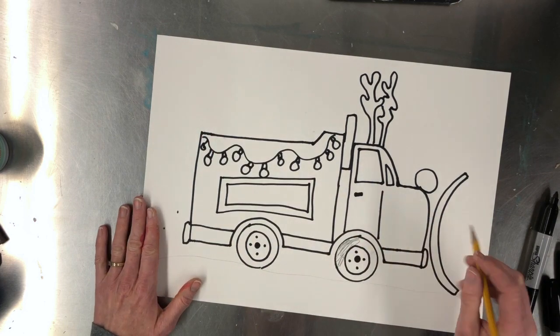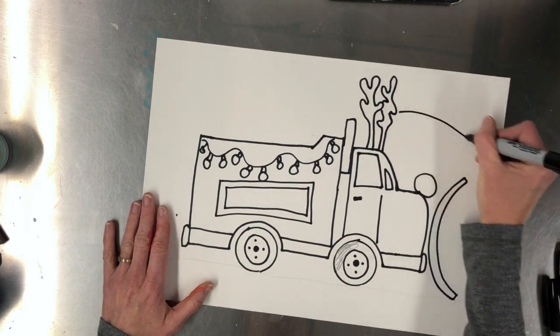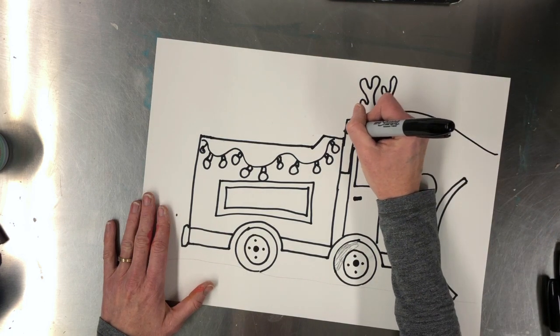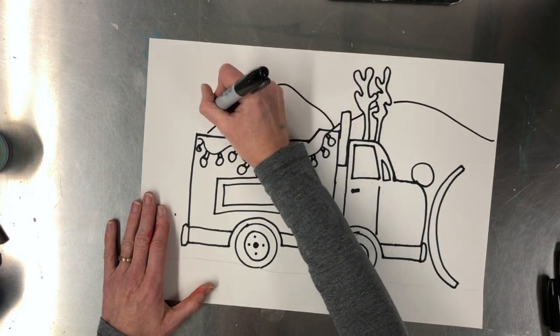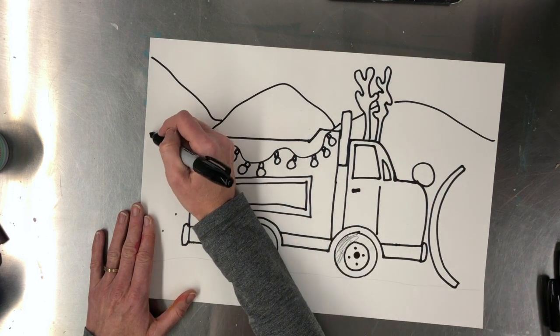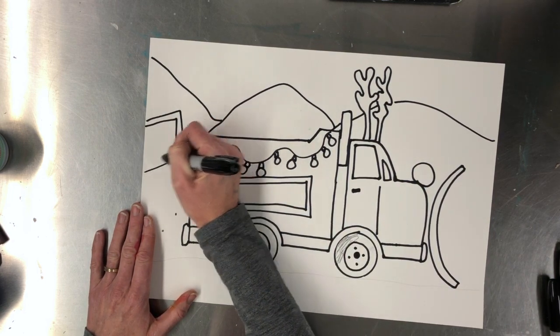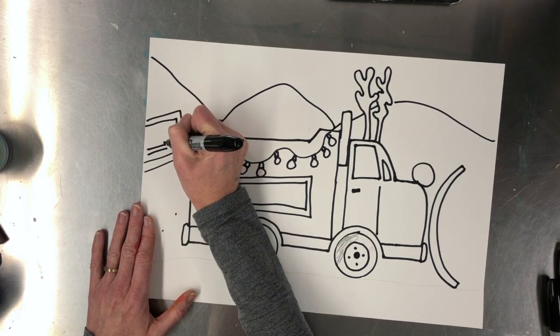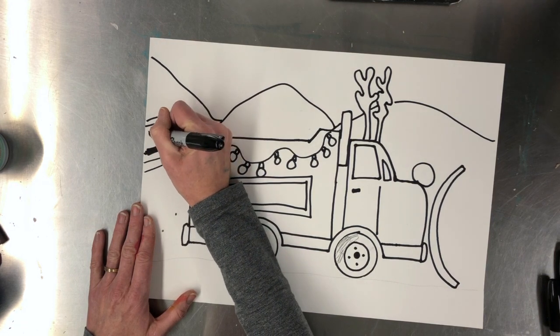For the background you can add different things if you want. Maybe you have some ski hills. Mountains. Whatever you want. Maybe you have a sign. A part of a sign. North Pole. Anything you want to do.